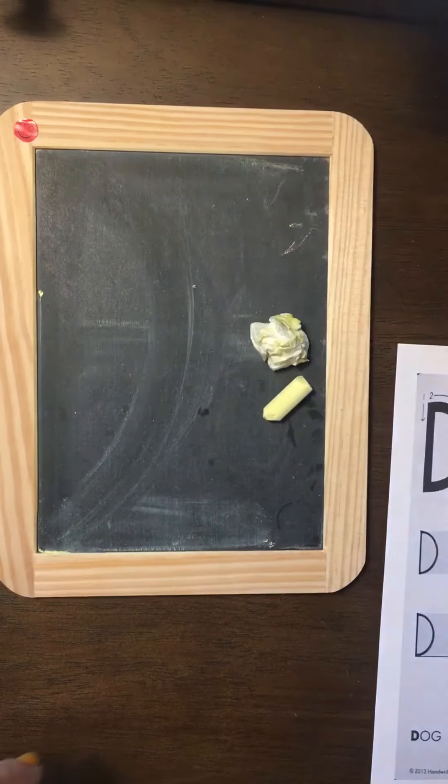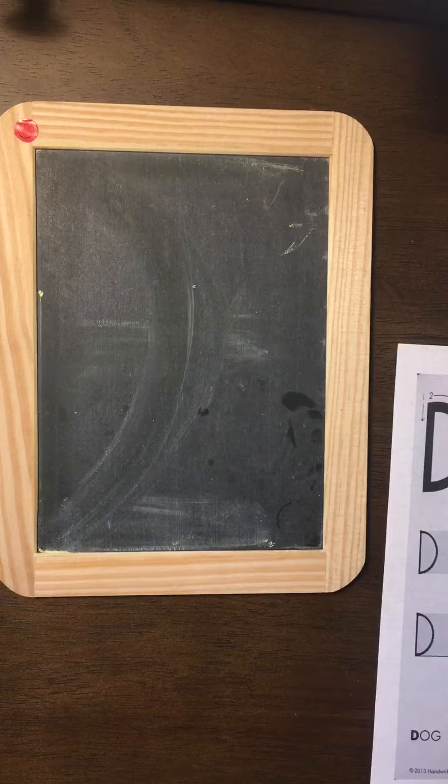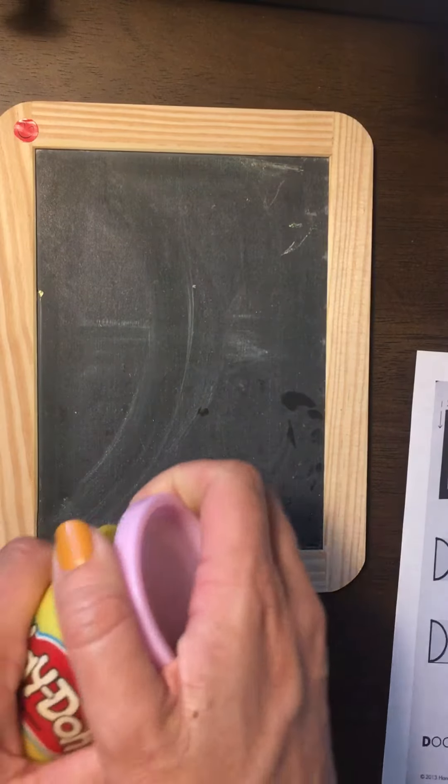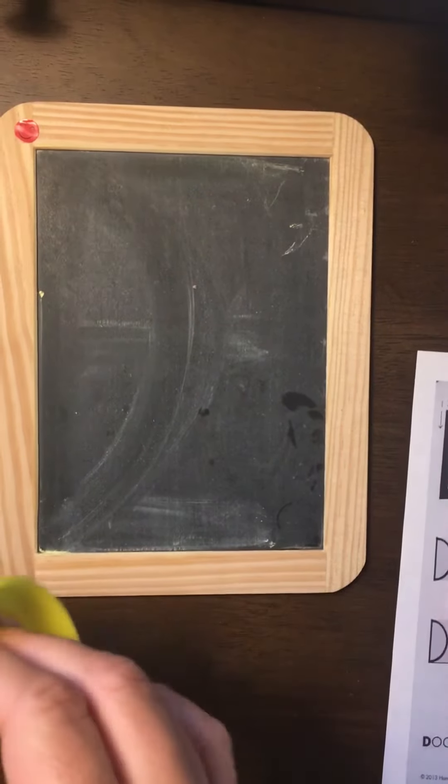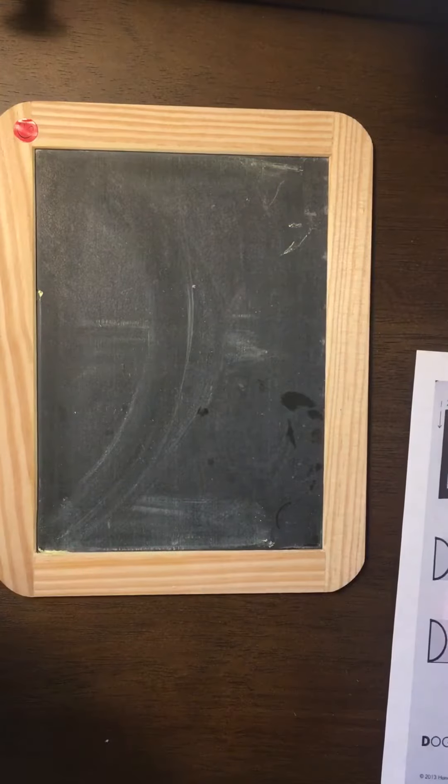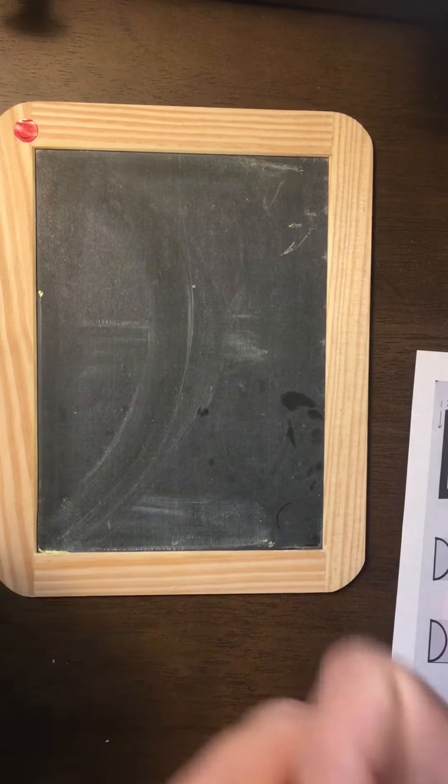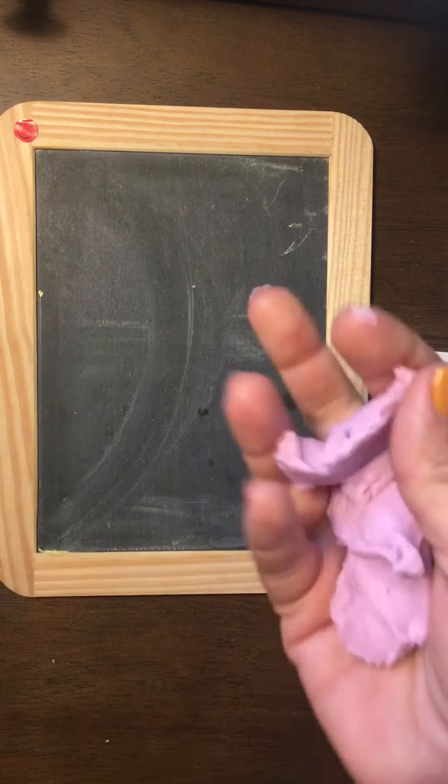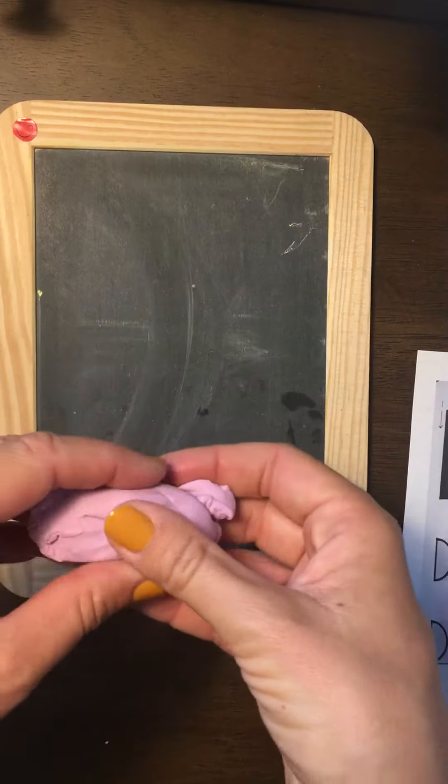Next I'm going to move some of these items to the side and just use my chalkboard and play-doh. We're going to take out about half of the play-doh and then we're going to break that amount in half again. So we have two chunks.